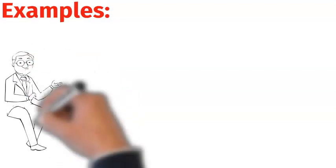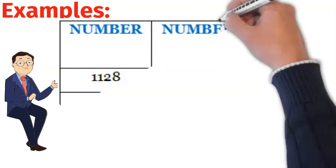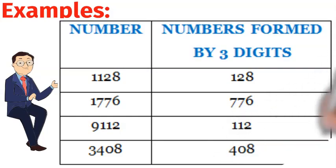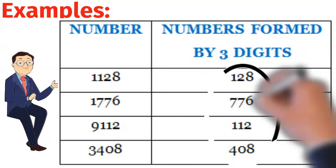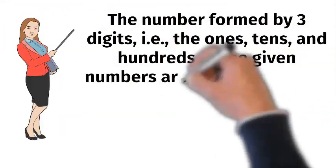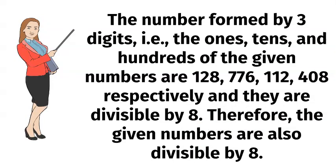For example, let's take some numbers: 1128, 1776, 9112, 3408. The number formed by the 3 digits, that is the 1's, 10's and 100's of the given numbers, are 128, 776, 112, 408 respectively, and they are divisible by 8. Therefore, the given numbers are also divisible by 8.